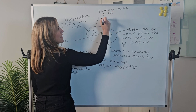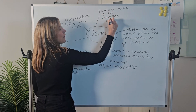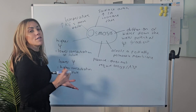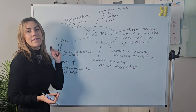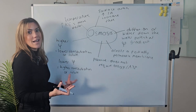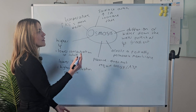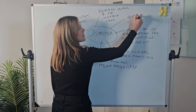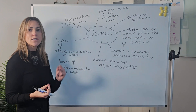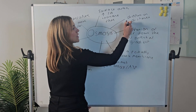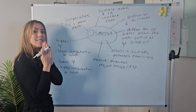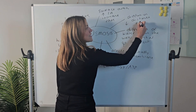Surface area also affects the rate of osmosis. If you increase the surface area, you increase the rate of osmosis simply because there's more surface over which osmosis can take place. For example, a folded cell membrane will have a faster rate of osmosis. Similarly, diffusion distance — or the thickness of the surface over which osmosis is taking place — matters: the shorter the diffusion distance, or the thinner the surface, the faster the rate of osmosis.